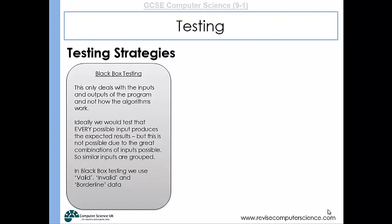So black box testing. This is one strategy and this is when you only deal with the inputs and outputs of the program. You don't worry about how the algorithms work. So ideally what we'd want to do is test every possible input and make sure that it produces the expected results.